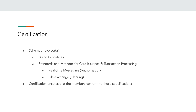The certification process ensures that a new issuer — and for that matter, any member, whether an issuing member or an acquiring member — adheres and conforms to the specifications set up by the scheme. Certification is the process where schemes like Visa, Mastercard, and RuPay certify that a new member is adhering to the standards for the products they would like to launch, and they are good to go for a live product launch.